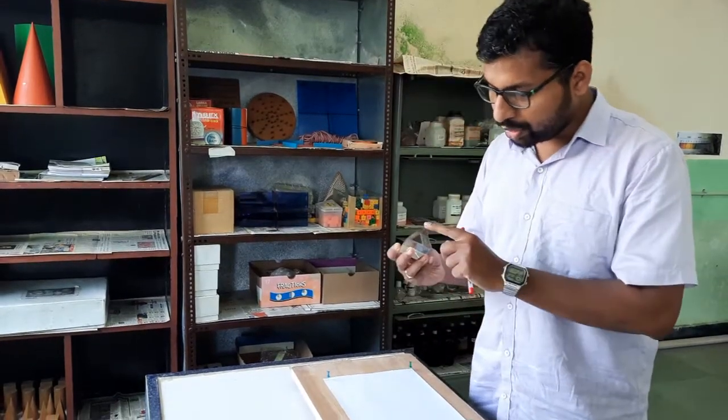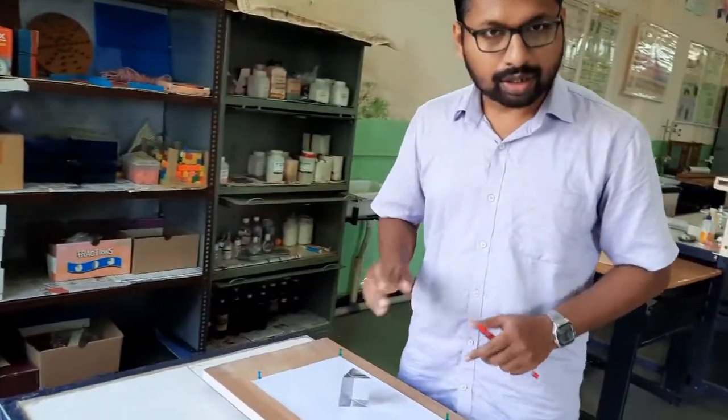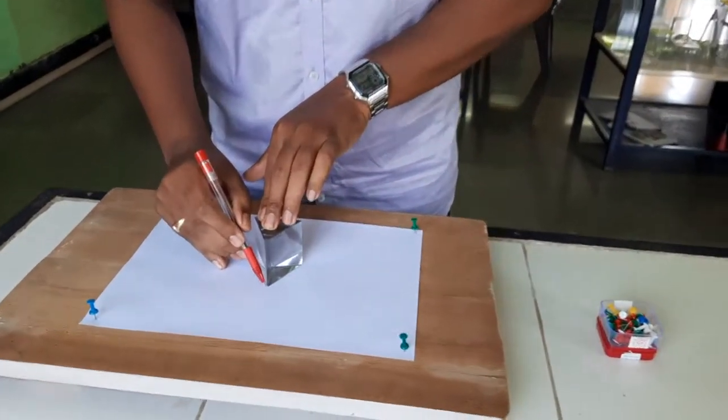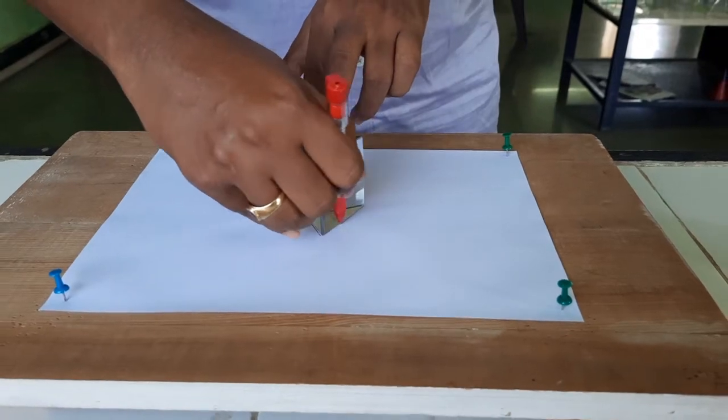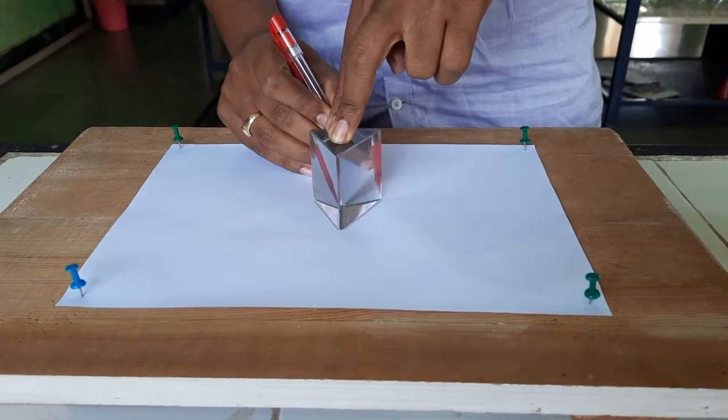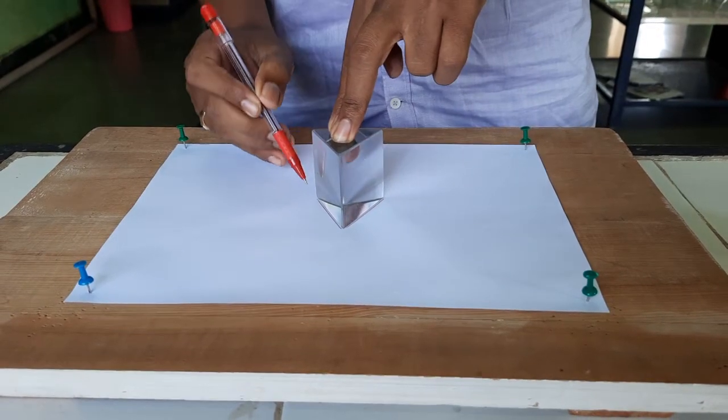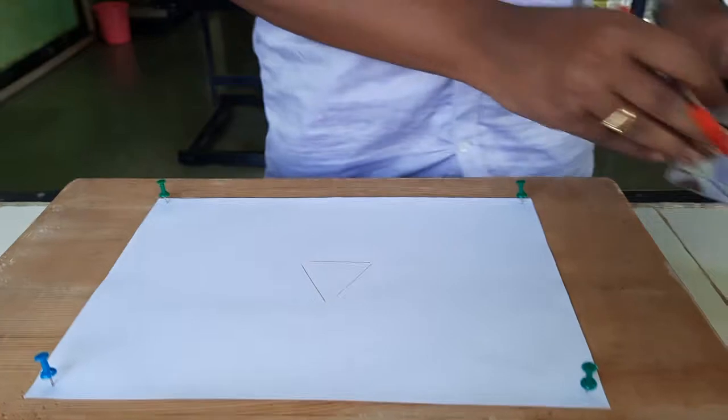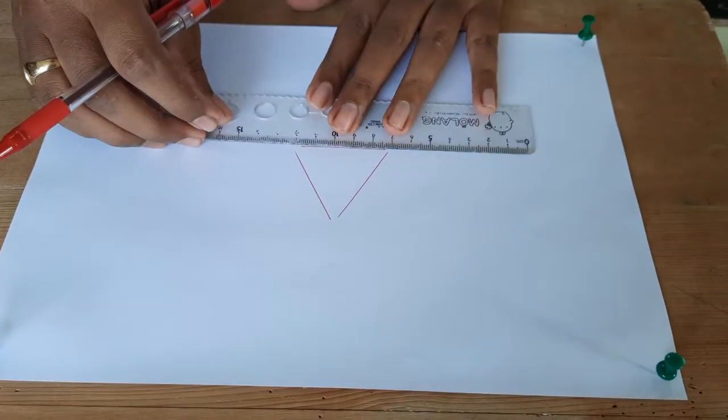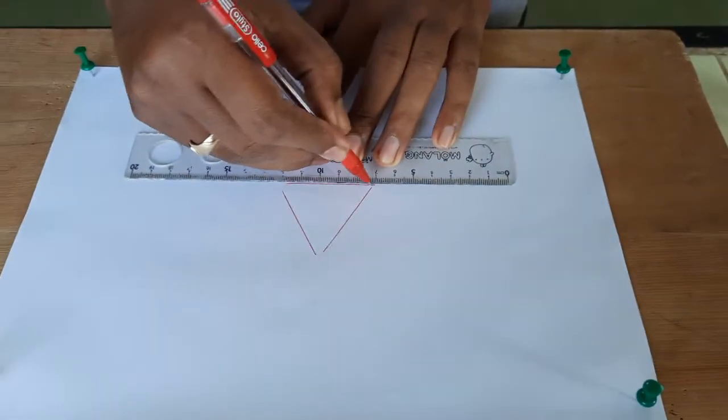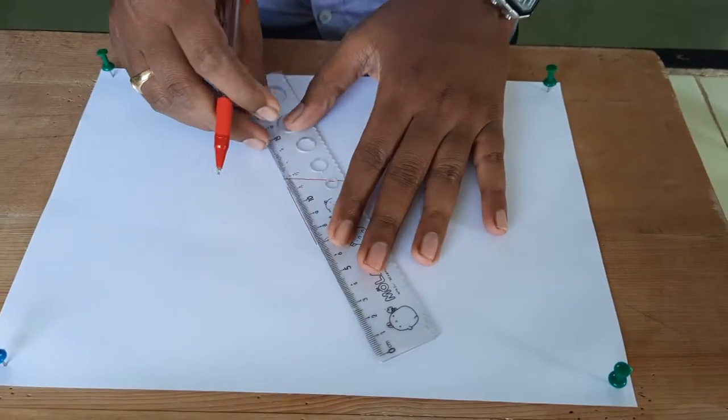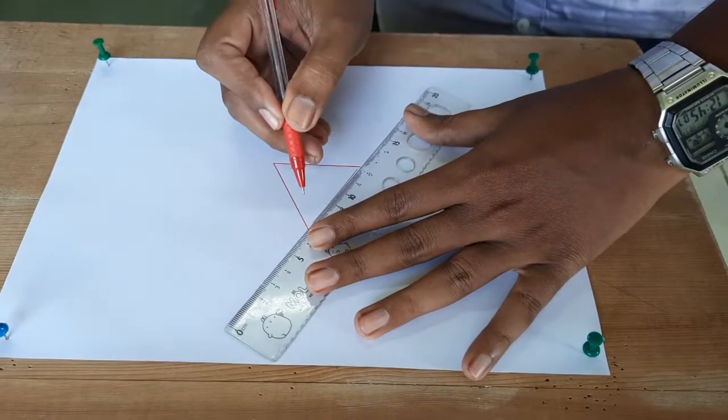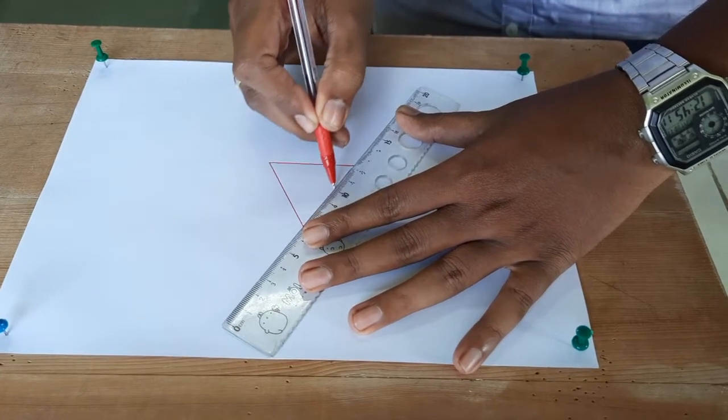So let us start the experiment. What we have to do is you have to keep this triangular side on the paper and then like a glass slab you have to draw the outline of the prism first. So here I am going to draw the outline of the prism. Don't extend this line until the end because this edge of a prism is not perfectly angular. It is little curvy so I will keep here a gap and then I will extend it using the scale. So here I extend these lines to make it a perfect equilateral triangle.